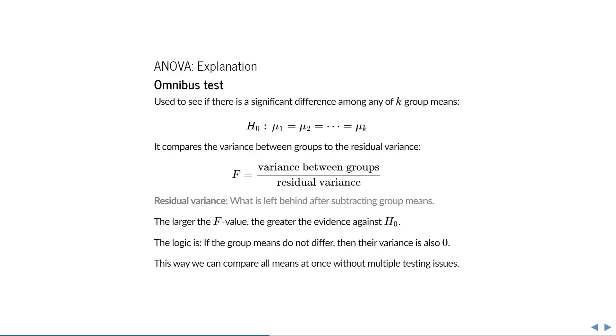This is the trick of the omnibus test. It does not actually look at the means, but rather at the variance of the group means divided by the residual variance. The larger the resulting f value, the greater the evidence against the null hypothesis.